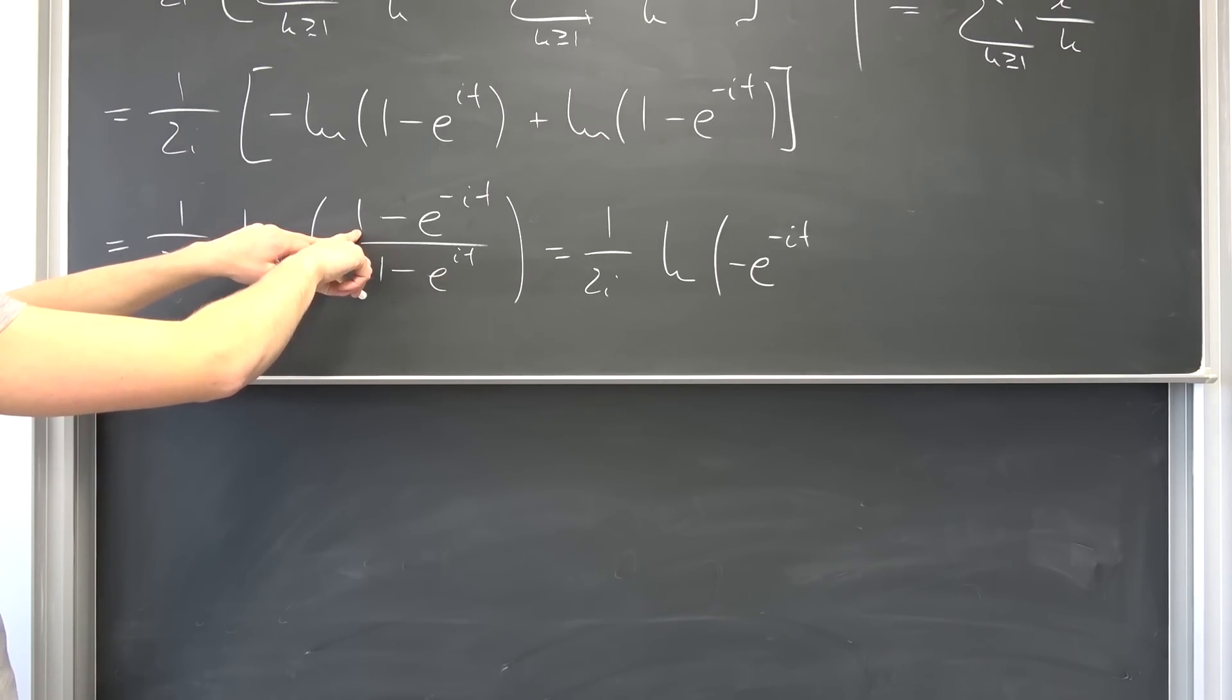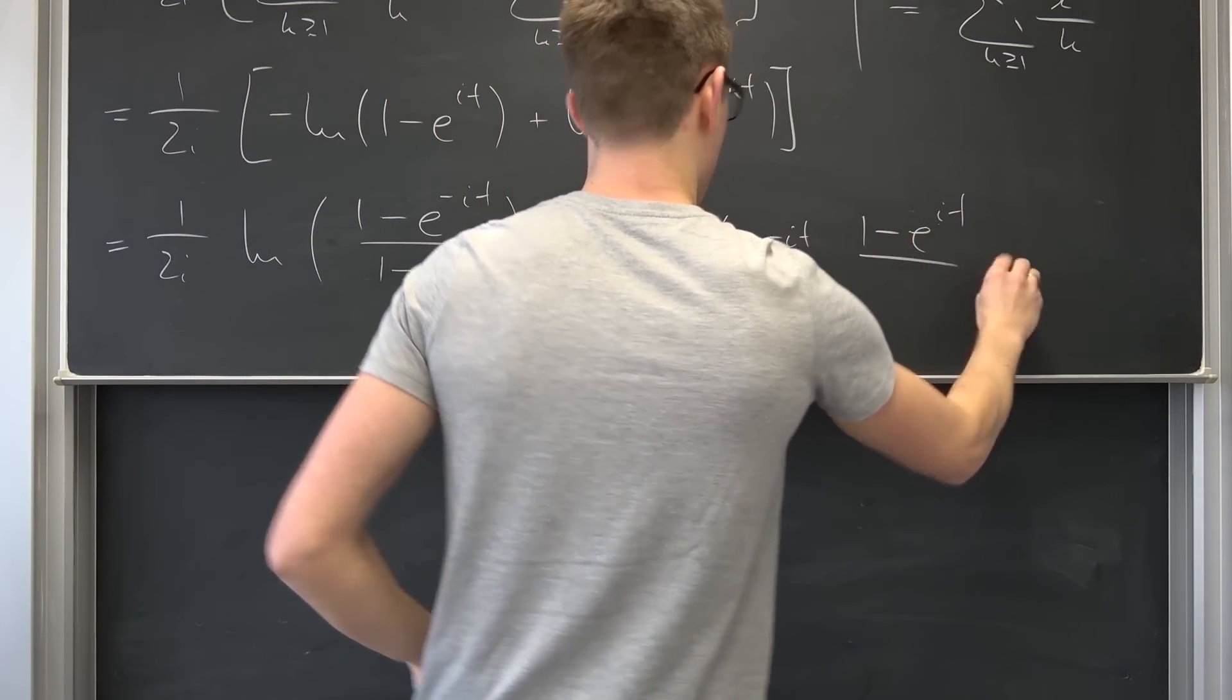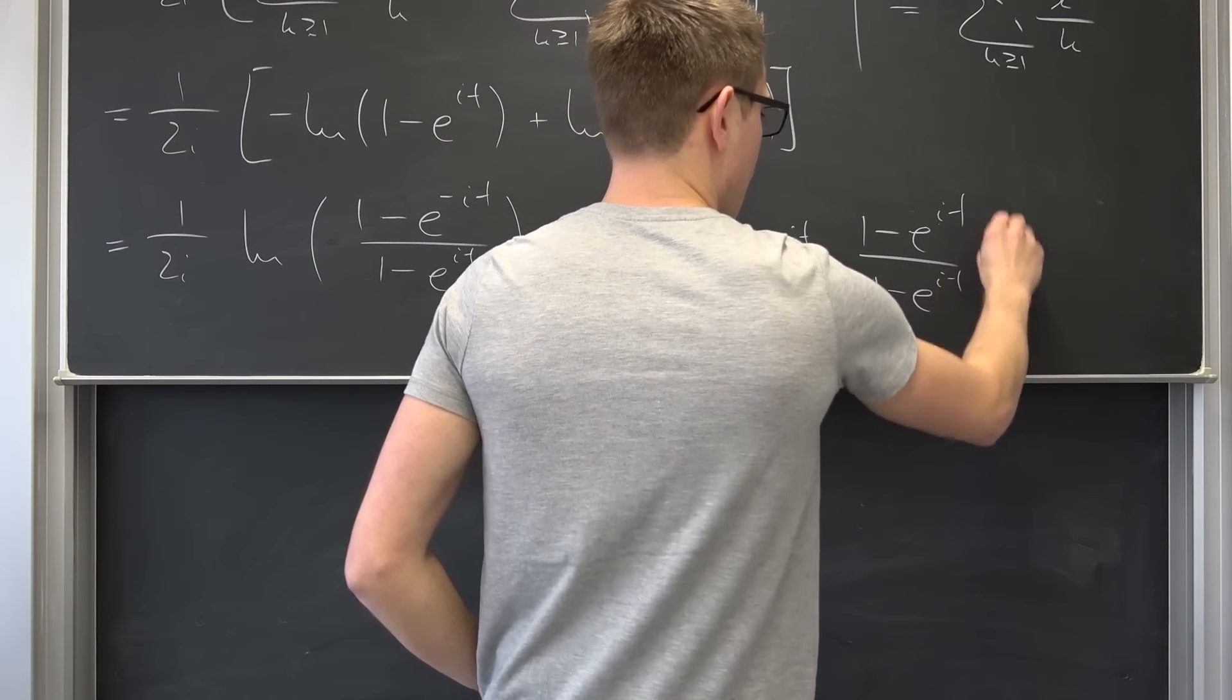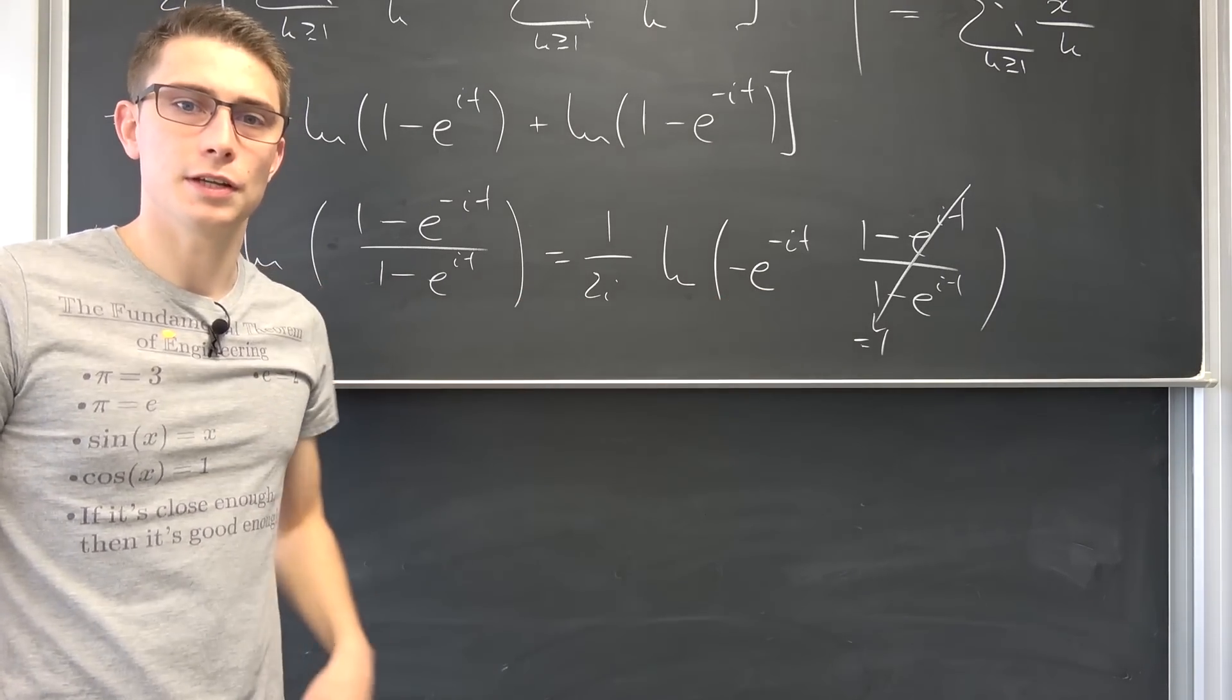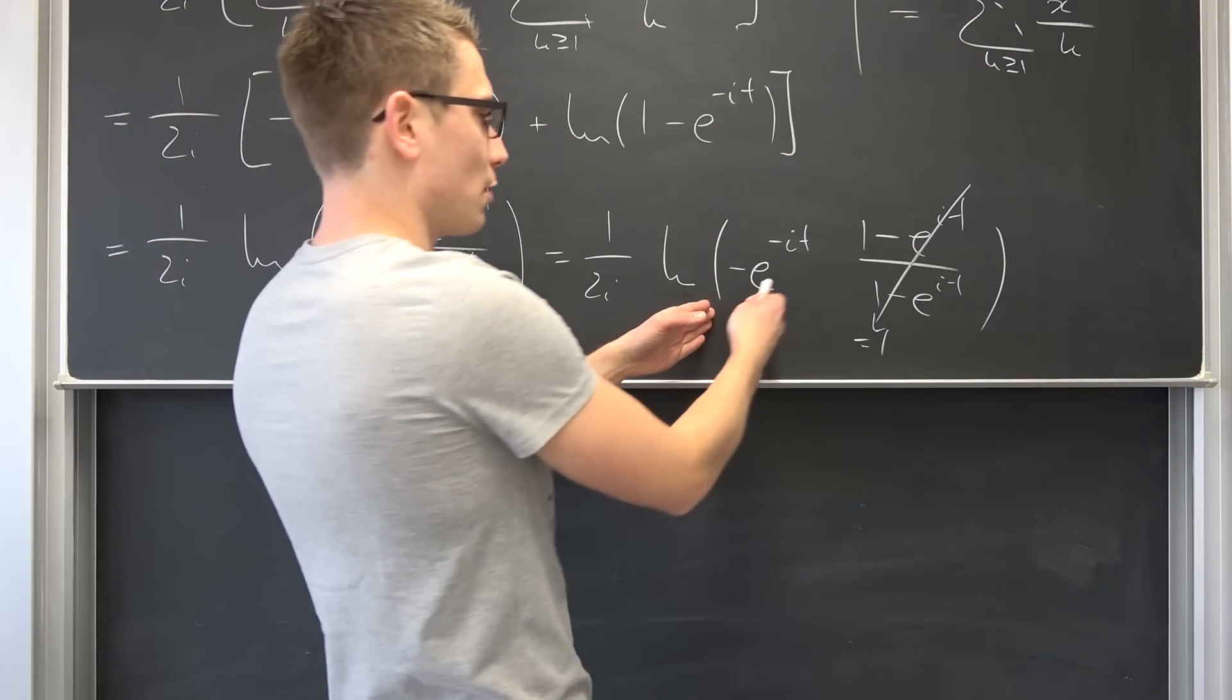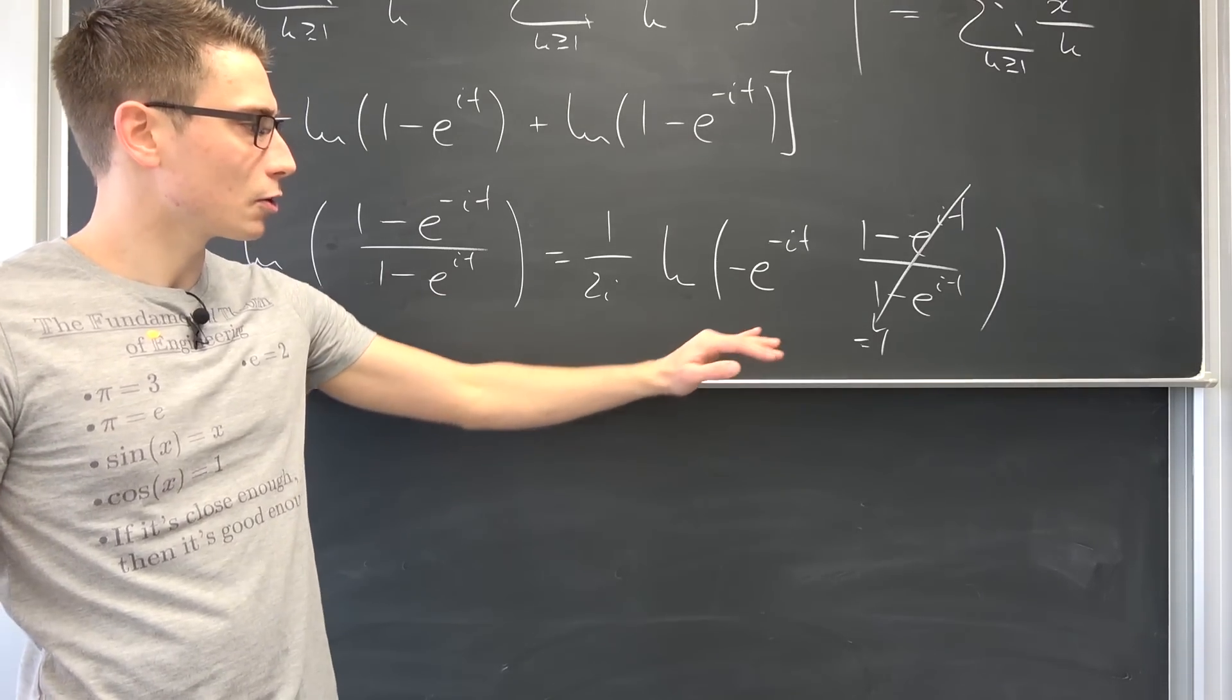If we factor this out then we get 1 minus e to the it over, and this is going to stay how it is, 1 minus e to the it. This is going to be a 1, meaning we are going to be left with the natural log of negative e to negative it. By using the natural log properties we are going to break this up. And the natural log in this context means the principal branch of the natural log.